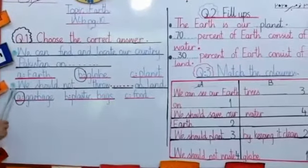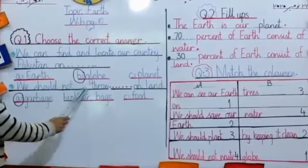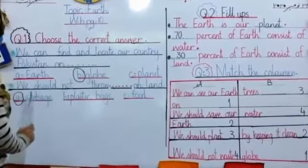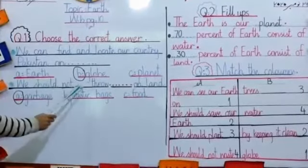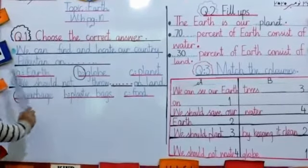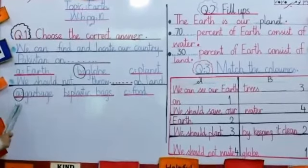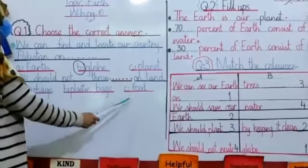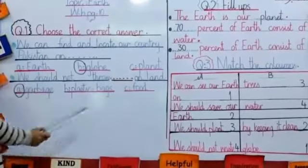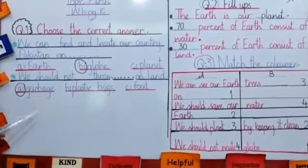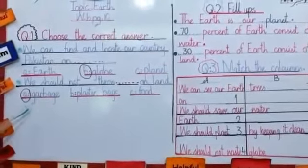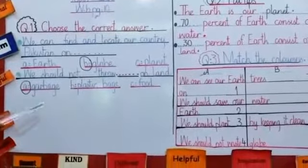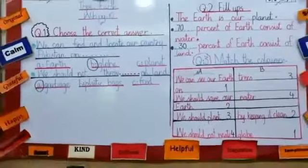Next one: we should not throw dash on the road. Option A is garbage, B is plastic bags, C is food. The right answer is garbage. Circle option A.